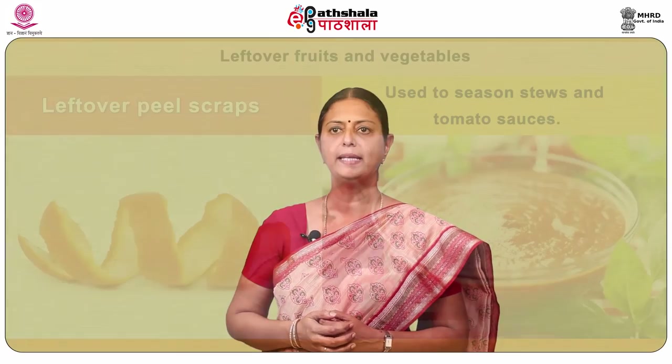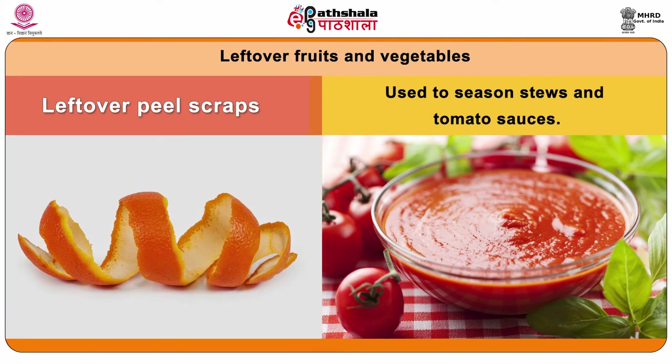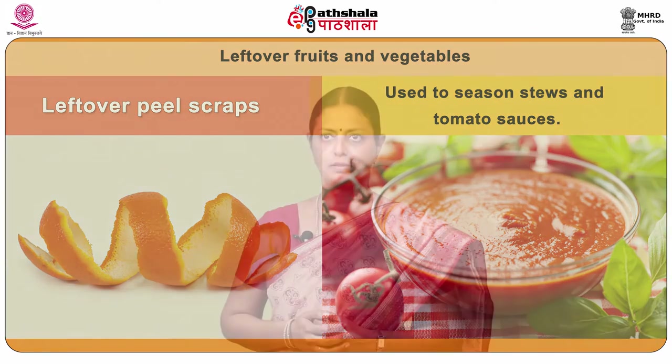Leftover citrus peel scraps can be used to season stews and tomato sauces. Leftover pulp of vegetables can be baked to make veggie crackers. Leftover bits of chopped vegetables can be simmered to make vegetable stock. Leftover mashed potatoes can be frozen in small amounts in paper bags and can be used in recipes instead of flour — in any recipe, one part mashed potatoes can be used with two parts flour.